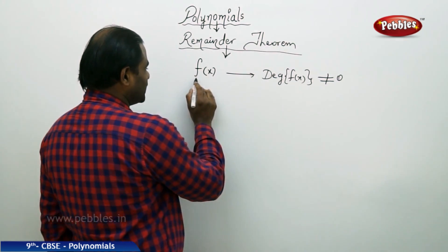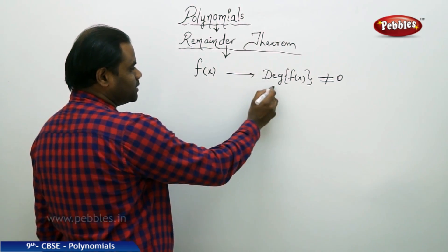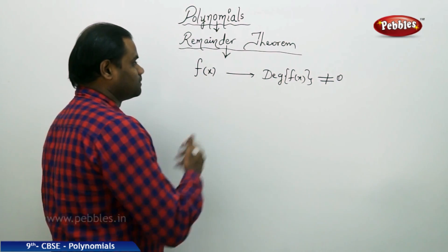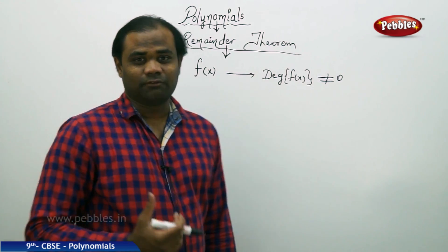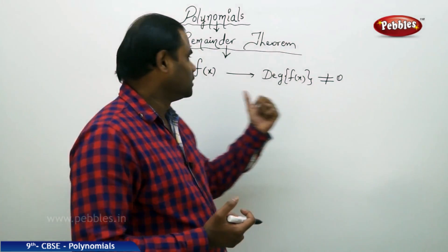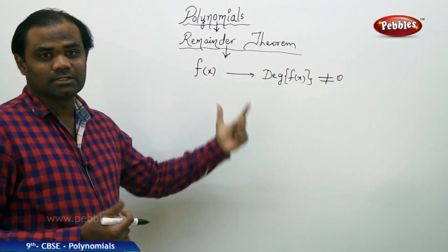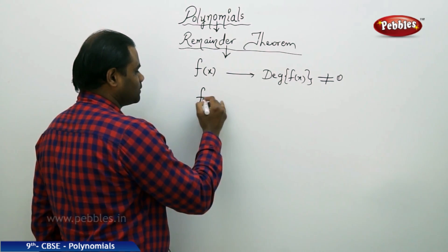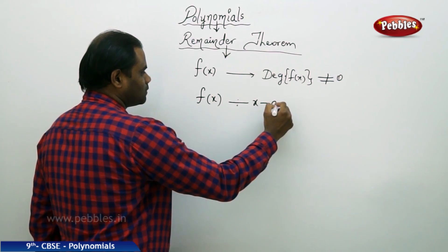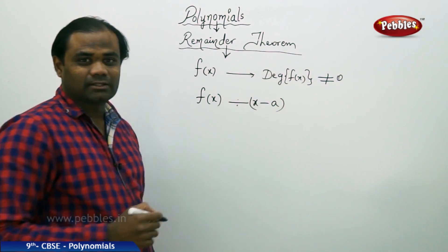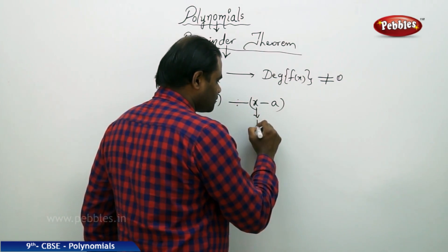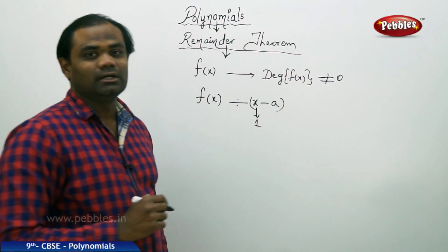With the first condition that I take the polynomial f(x) with degree of f(x) being non-zero — that is, f(x) is not a constant polynomial — if the polynomial f(x) is divided by x minus a, we know that x minus a is a linear polynomial because the power of x is 1, and hence this is a linear polynomial.